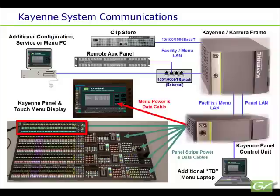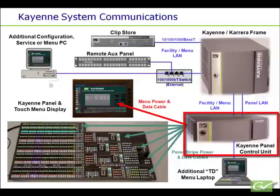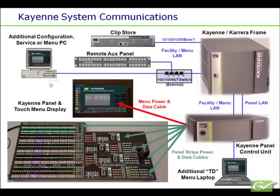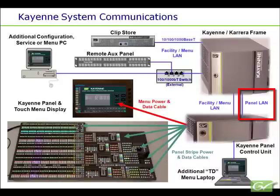The menu has a different dedicated cable, also connected to the PCU, that supplies power and control for the touchscreen display and soft knobs. The PCU has a built-in gigabit Ethernet switch that connects to the frame and to any additional Ethernet devices, such as additional menu computers. The menu data is carried over the facility/menu LAN connection.